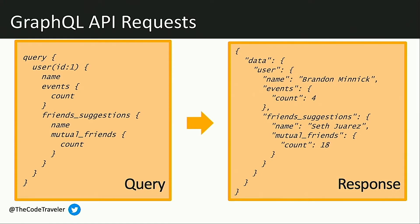And on the response, I get back this JSON payload that provides exactly the data that I asked for. We see that we get the name Brandon Minnick, events count four, and friend suggestions with Seth Juarez and our mutual friends count of 18. So we've gone from making multiple API requests to just one, and we've gone from getting tons and tons of data — maybe data that we didn't even need — to only getting back the data we want.